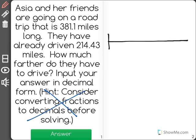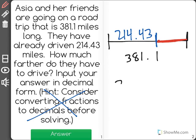The road trip total is 381.1 miles, and so far they have traveled 214.43. So what we're trying to find is the difference. And I know when we find the difference we take the total amount and we subtract what has already happened—in this case, how far they've already traveled.